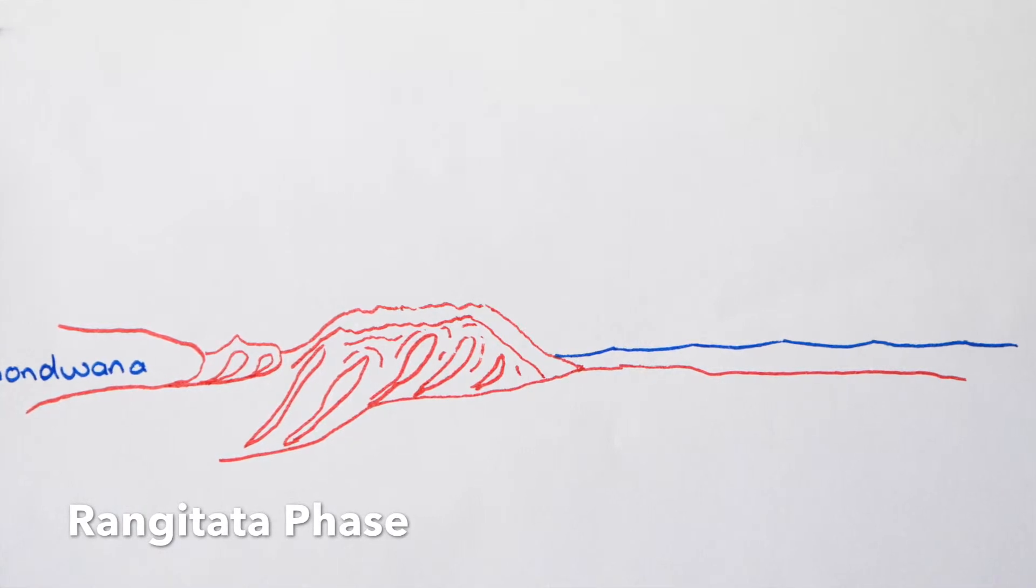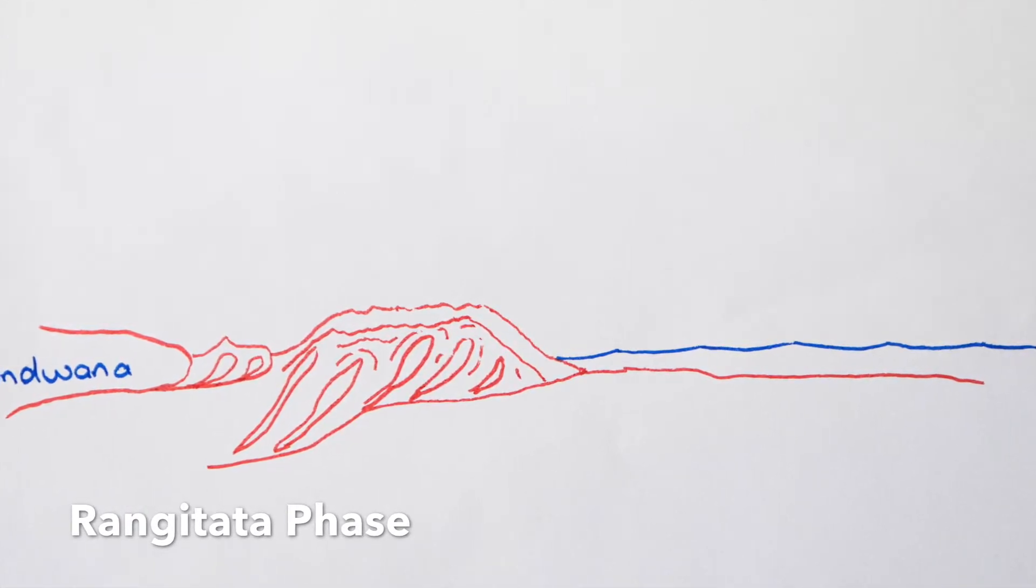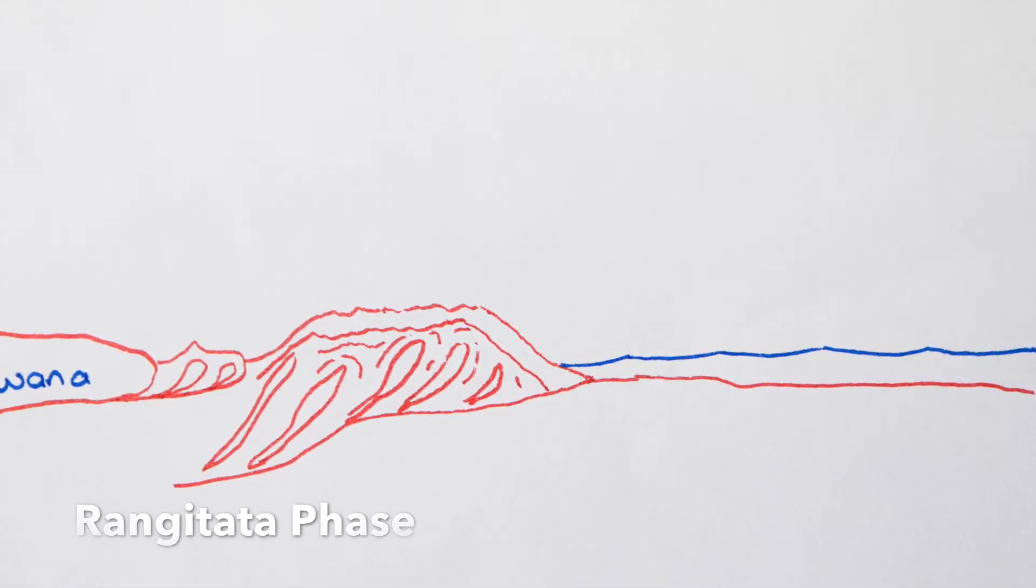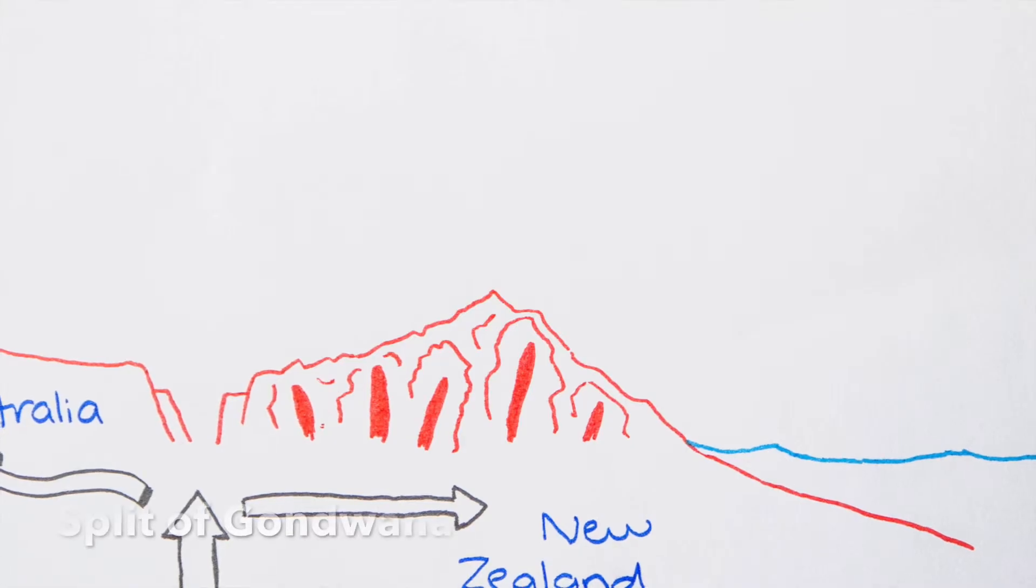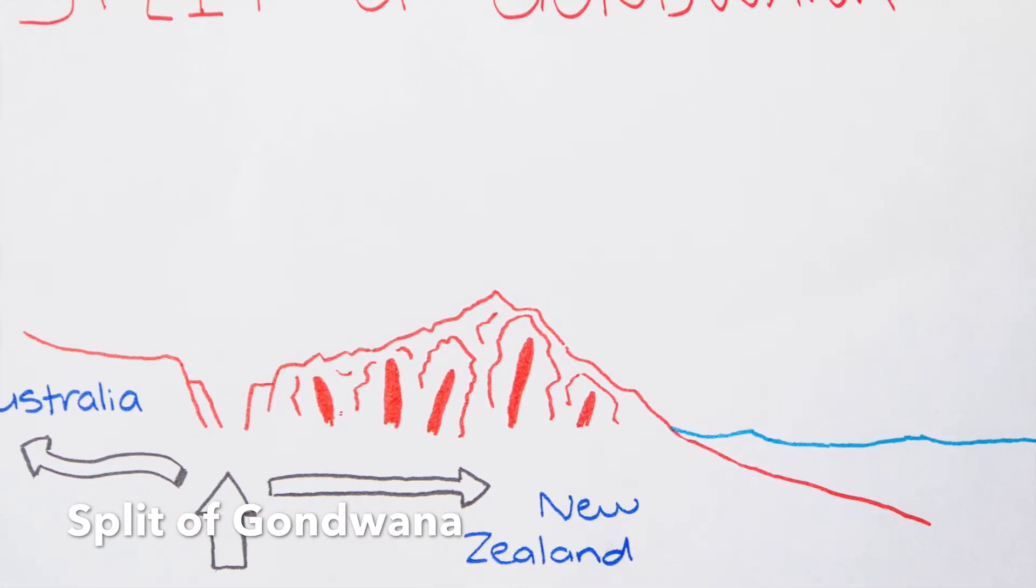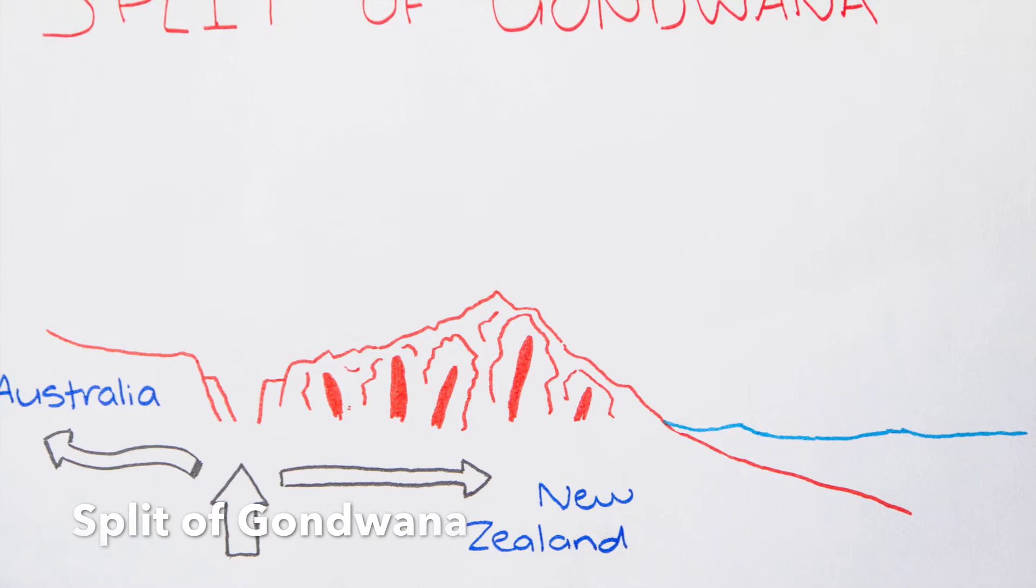The Rangitata orogeny was a second collision and period of uplift against Gondwana. This caused uplift and folding of the Greywacke sandstone. 85 million years ago, Gondwana split. This opened up what we call today the Tasman Sea as New Zealand split away from Australia.